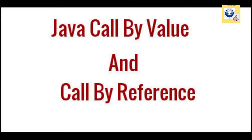There are two mechanisms of calling methods in Java: call by value and call by reference. In call by value, we directly pass the value, and in call by reference, we pass the reference or address of the value. In today's video, we will see what is call by value and call by reference.